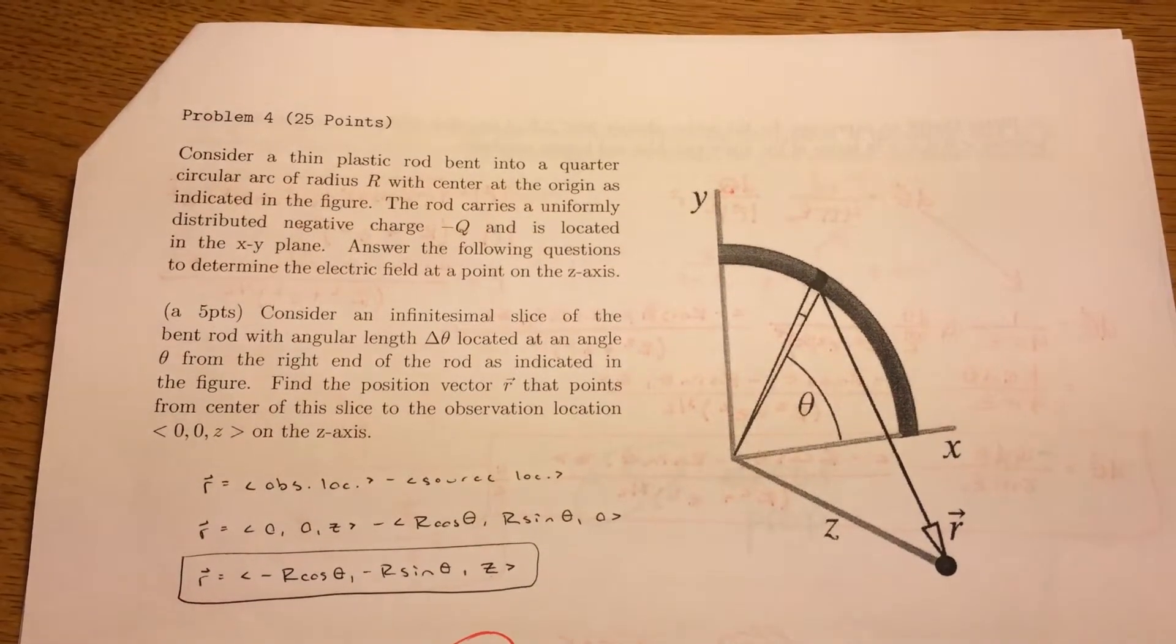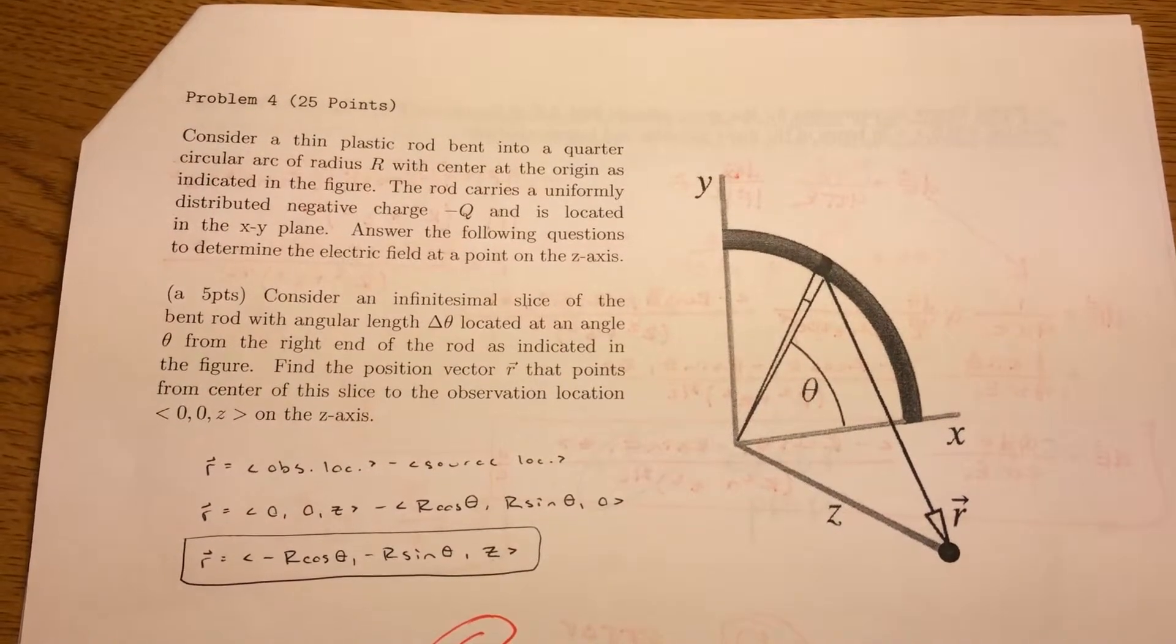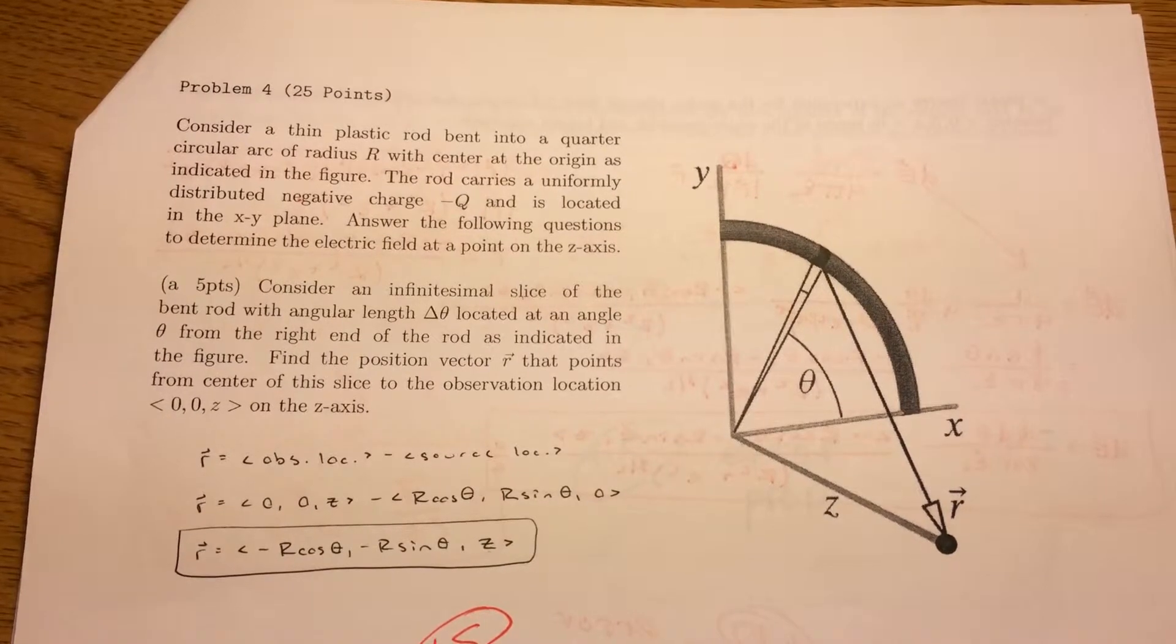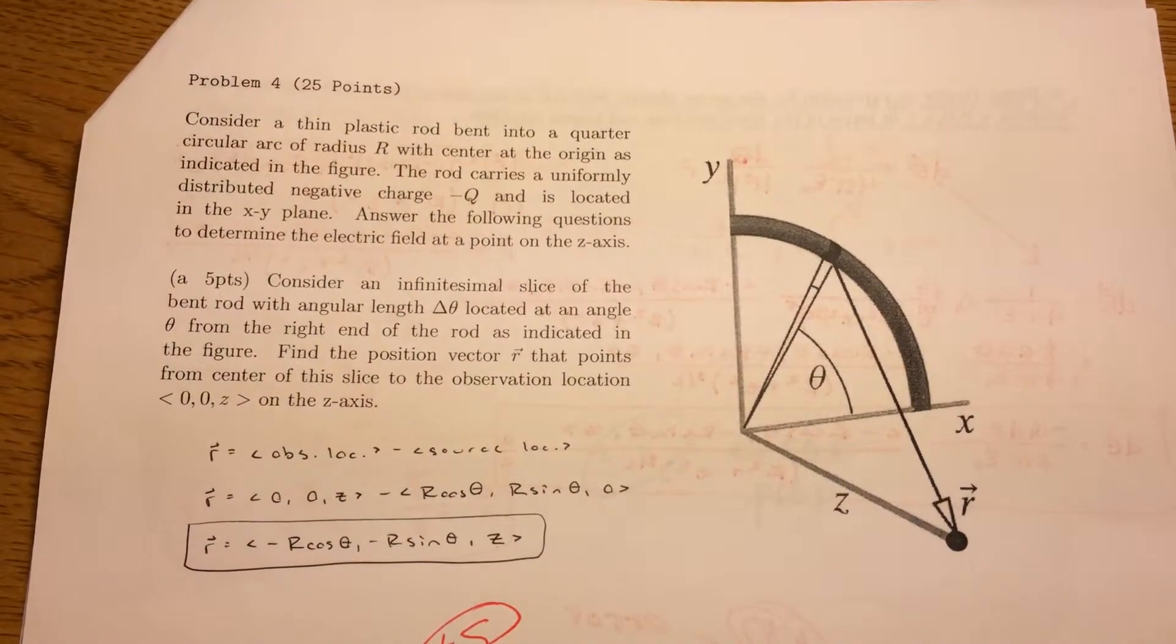We're going to be considering a thin plastic rod bent into a quarter circular arc of radius capital R, with center at the origin as indicated in the figure. The rod carries a uniformly distributed negative charge, negative q, and is located in the x-y plane.